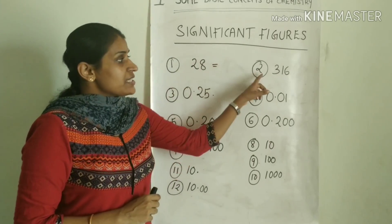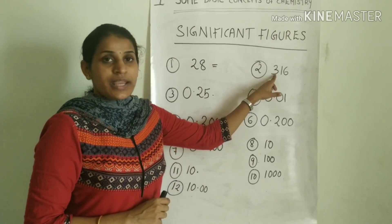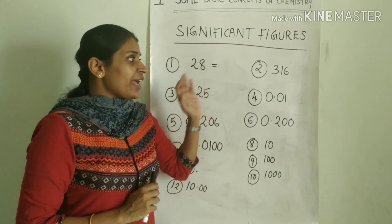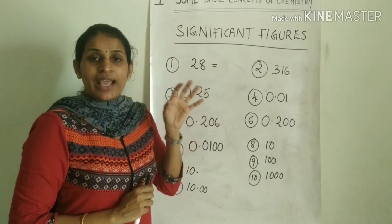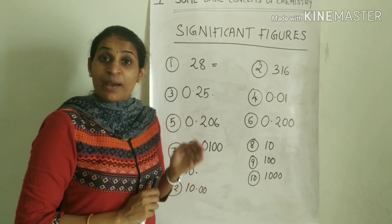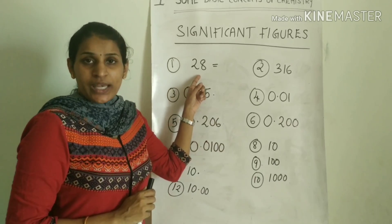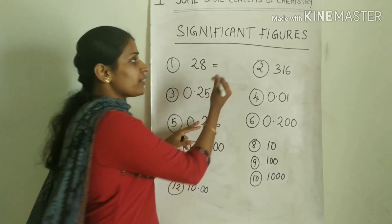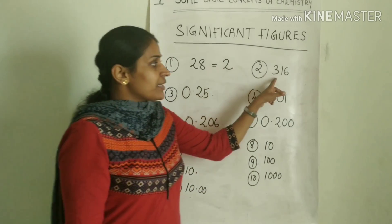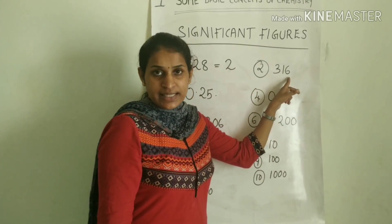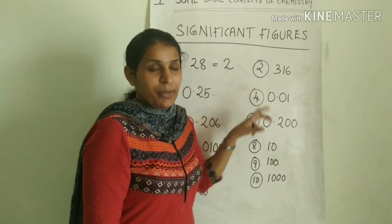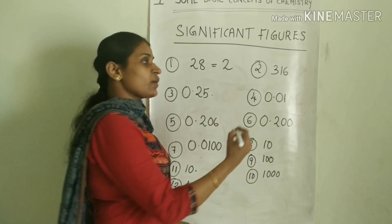First example is 28, second example is 360. In these two values, how many non-zero values are there? Those non-zero values are the significant figures. So here, for 28, number of significant figures is equal to 2. For 360, the non-zero digits are 3, 6 — so number of significant figures is equal to 3.